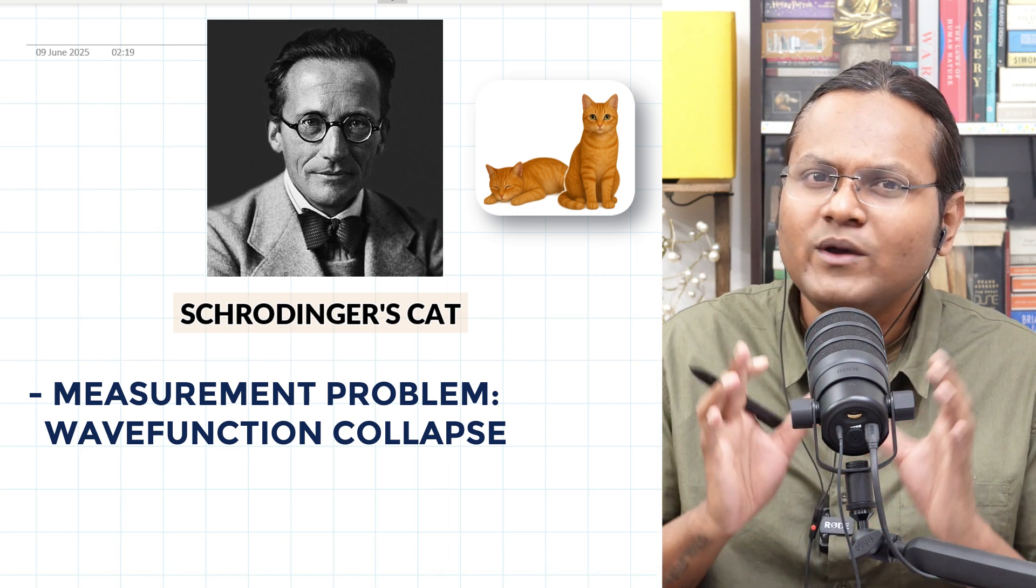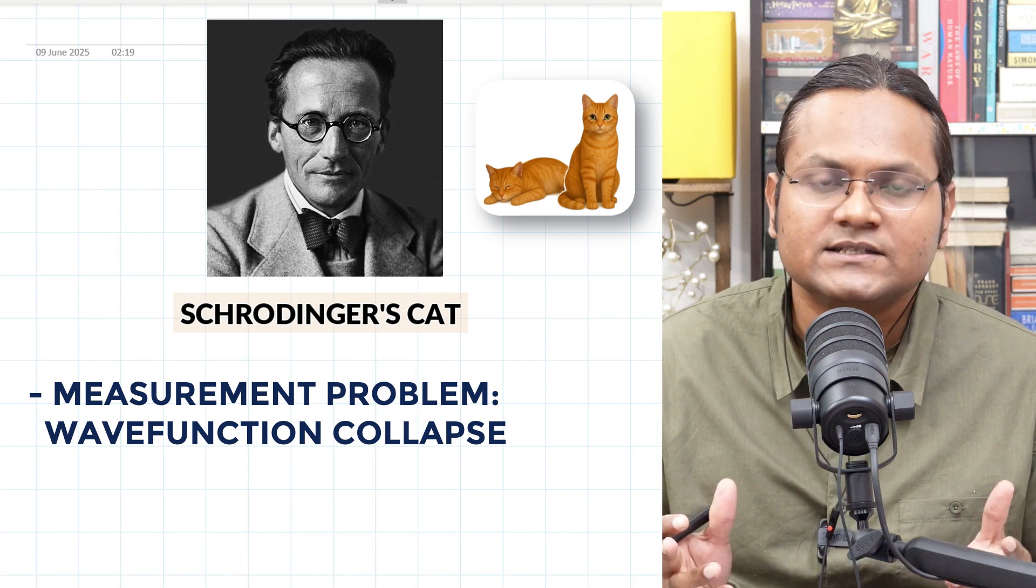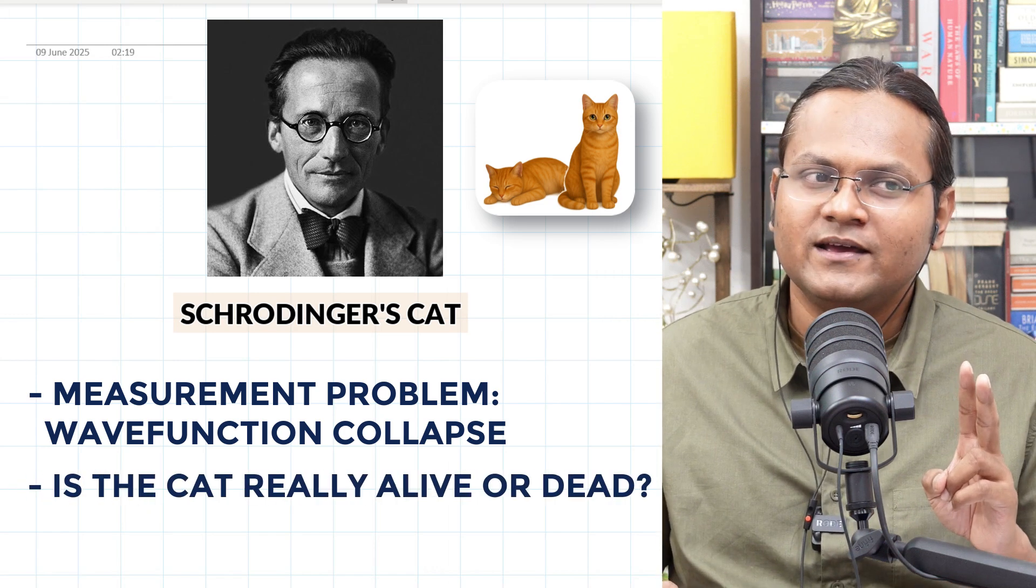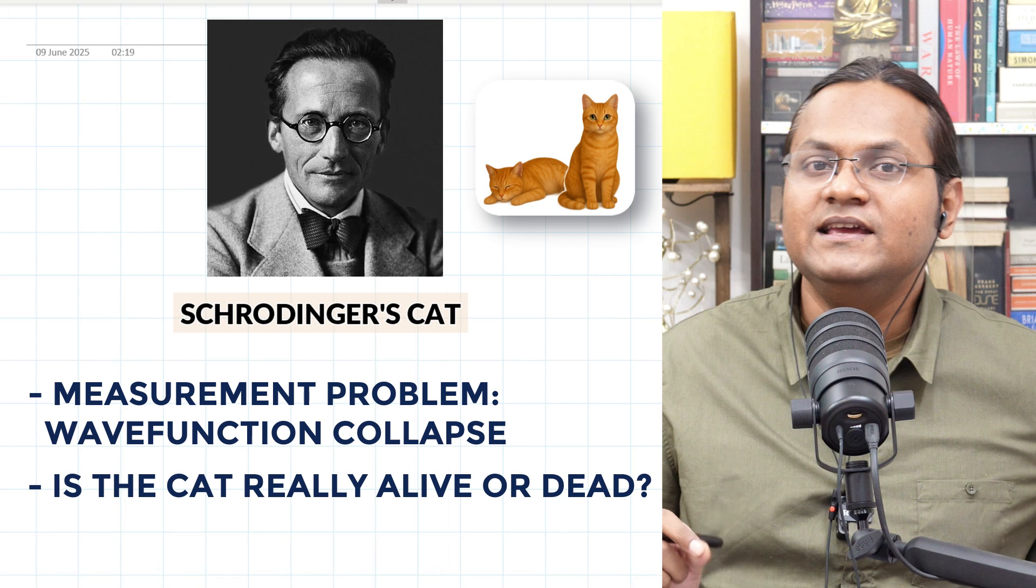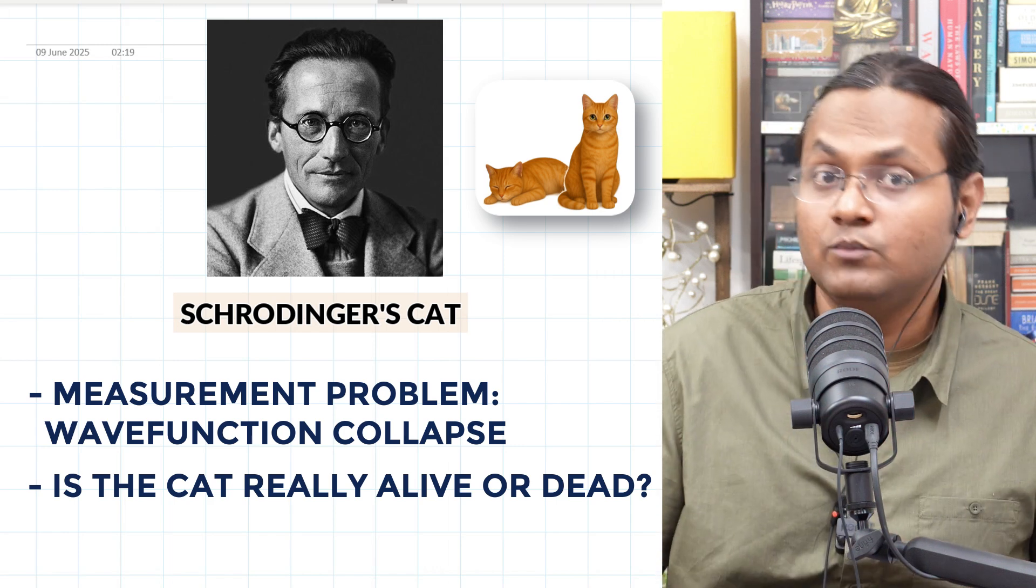And it is only when an observation is made by opening the chamber, the state of the cat is revealed to us. And Schrödinger was simply highlighting this problematic part of quantum mechanics by using the analogy of a cat. He was questioning that, how is this actually possible? Does it even make any sense? And second of all, is the cat really alive or dead? Now I want to answer these two questions today. So let's look at it in a little bit more detail.